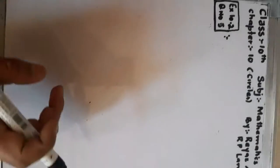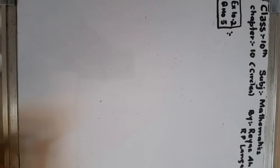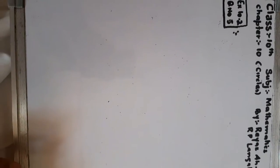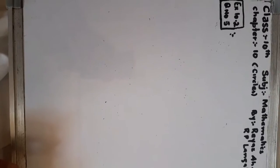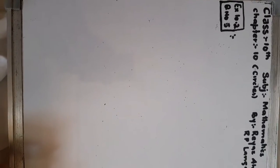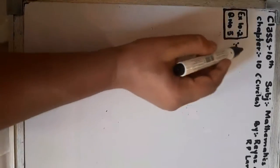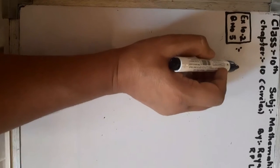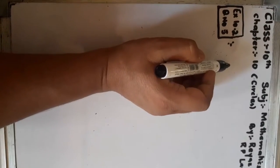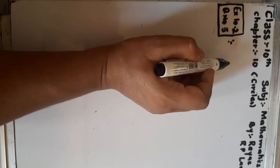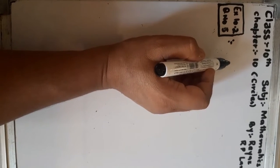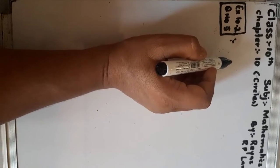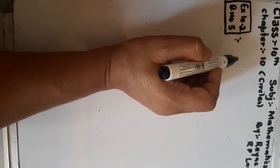Assalamu alaikum dear viewers, it is Riyadhan Mala here. My class is for 10th grade, subject mathematics, and the chapter we are discussing is Circles — chapter number 10, exercise 10.2, question number 5. Question 5 says: prove that the segment joining the points of contact of two parallel tangents passes through the center.